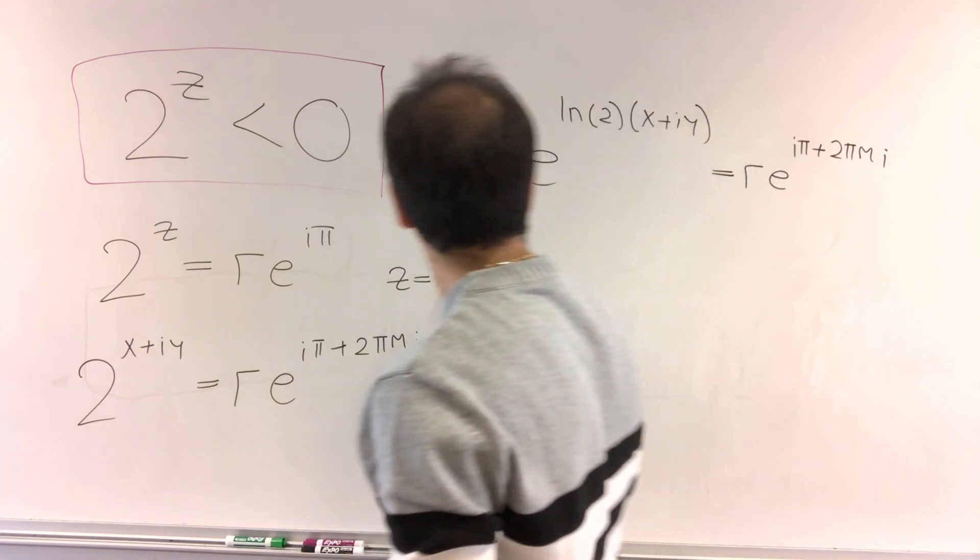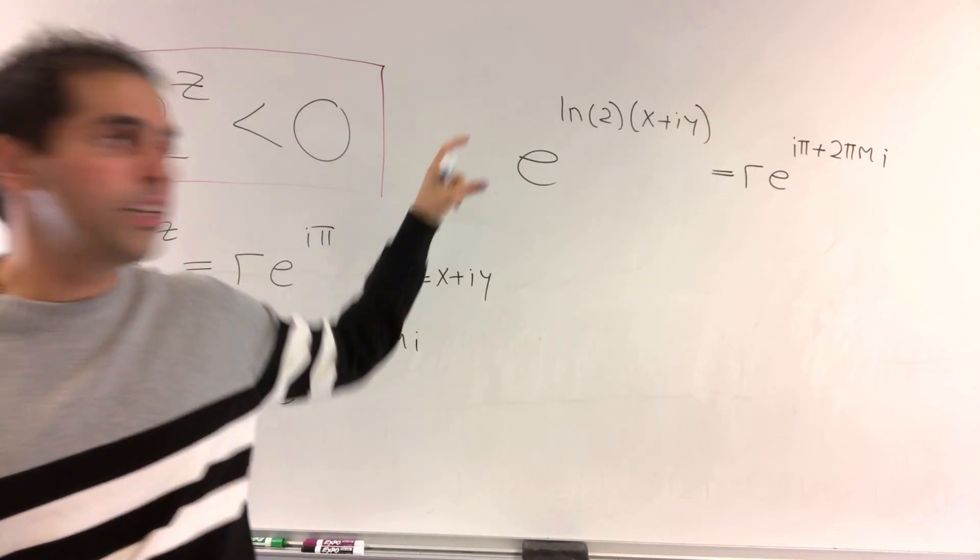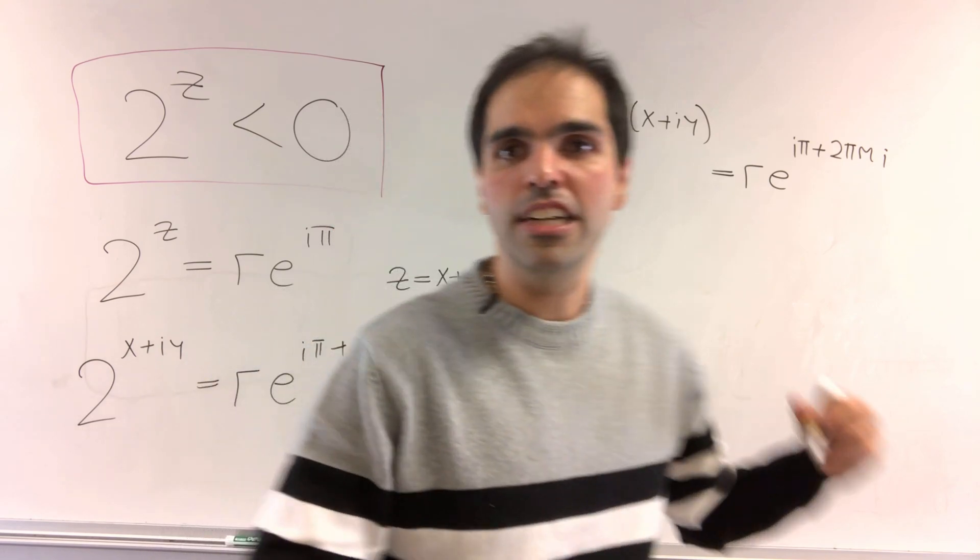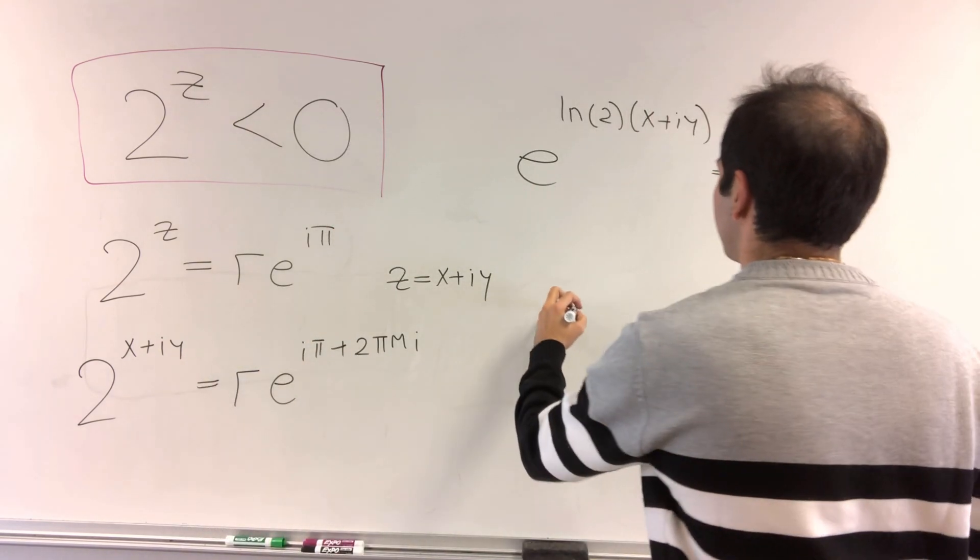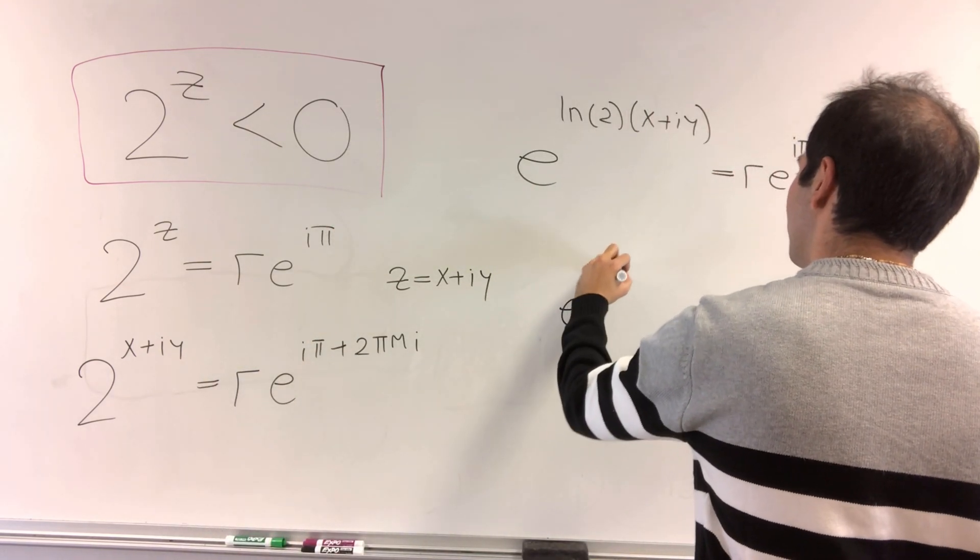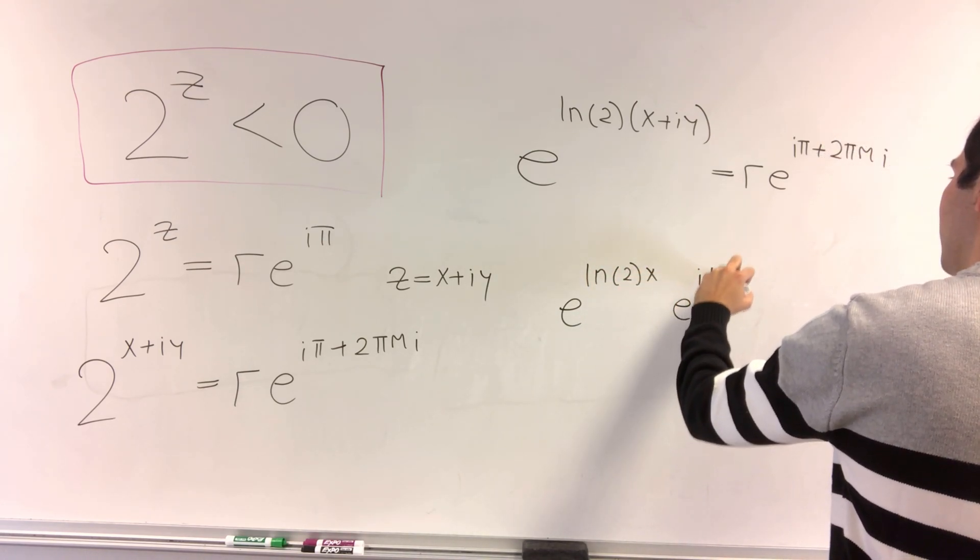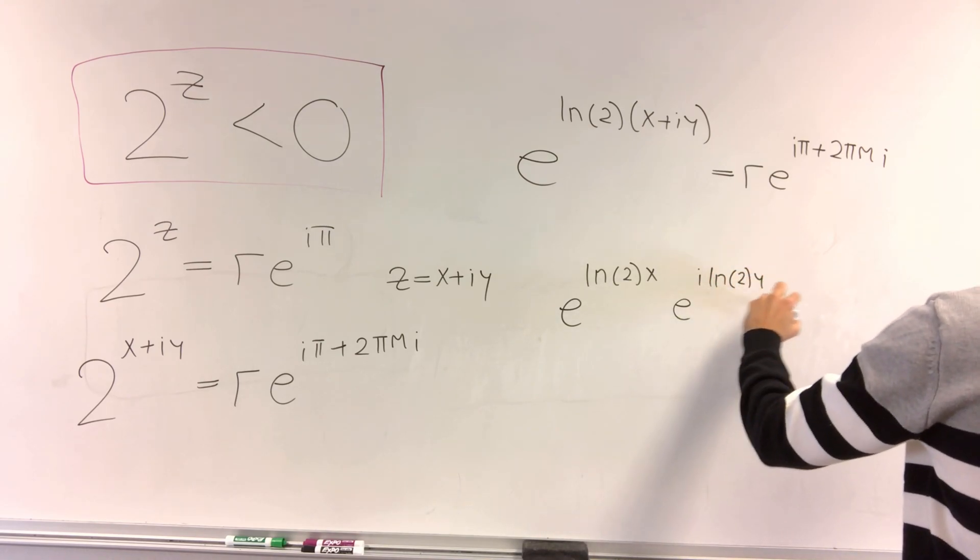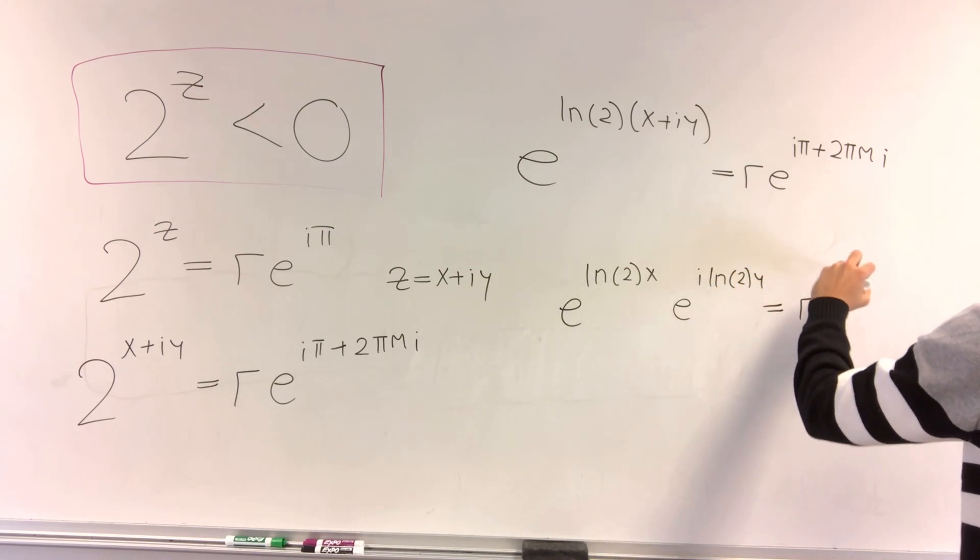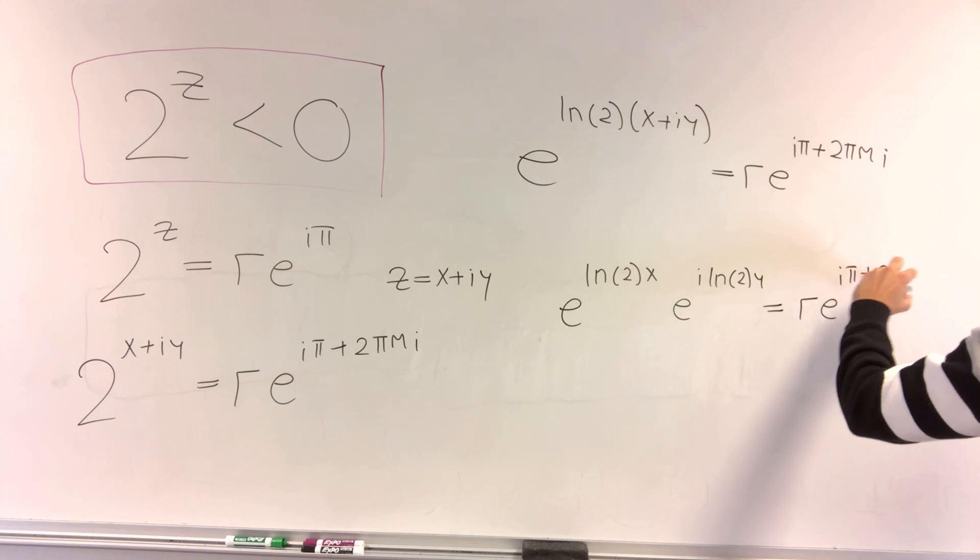and that's equal to r e to the i pi plus 2 pi m i. And then, well, then you can separate out the real part, so this becomes e to the ln of 2 x times e to the i ln of 2 y,